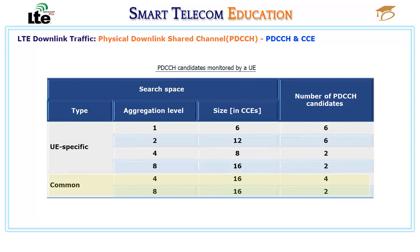Common search space consists of CCEs used for sending control information common to all UEs. The maximum number of CCEs in the common search space is 16. For example, common search space CCEs are used by the eNodeB for sending control information for SIBs, which is common for all UEs. The eNodeB can also send control information for a specific UE on the common search space.